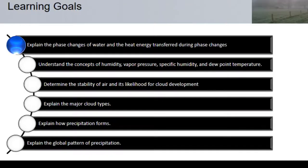Today's learning objectives are: explain the phase changes of water and the heat energy transferred during phase changes, understand the concepts of humidity, vapor pressure, specific humidity, and dew point temperature, determine the stability of air and its likelihood for cloud development, explain the major cloud types, explain how precipitation forms and what type of precipitation you have, and the global pattern of precipitation.